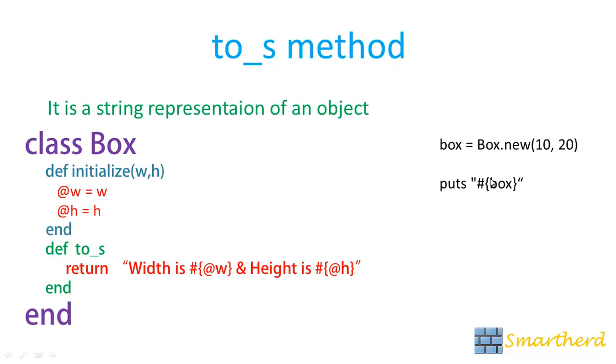So when you write this code this will simply call this method and this method will return this width is 10 and height is 20 and you will get the output as width is 10 and height is 20. There is another simpler way to call this method.